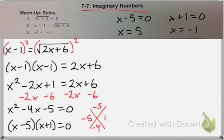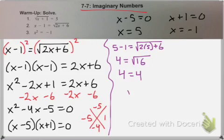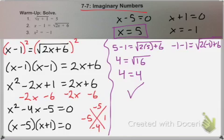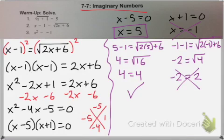And now we need to double check both of those answers. So we have 5 minus 1. Since we get a statement that is always true, x equals 5 is an answer. Let's try negative 1 — negative 1 minus 1. Here you might already notice that the square root of 4 is not negative 2. Actually, the square root of any number can never be a negative. So x equals negative 1 is not a solution, and x equals 5 is your only solution.